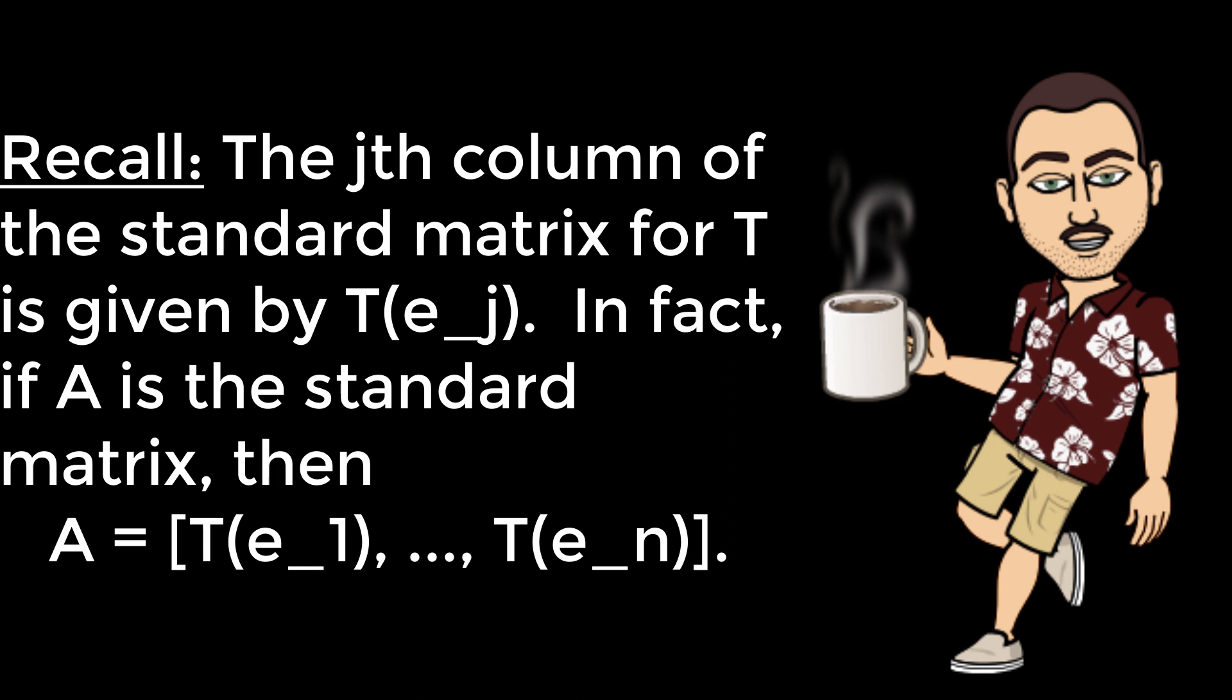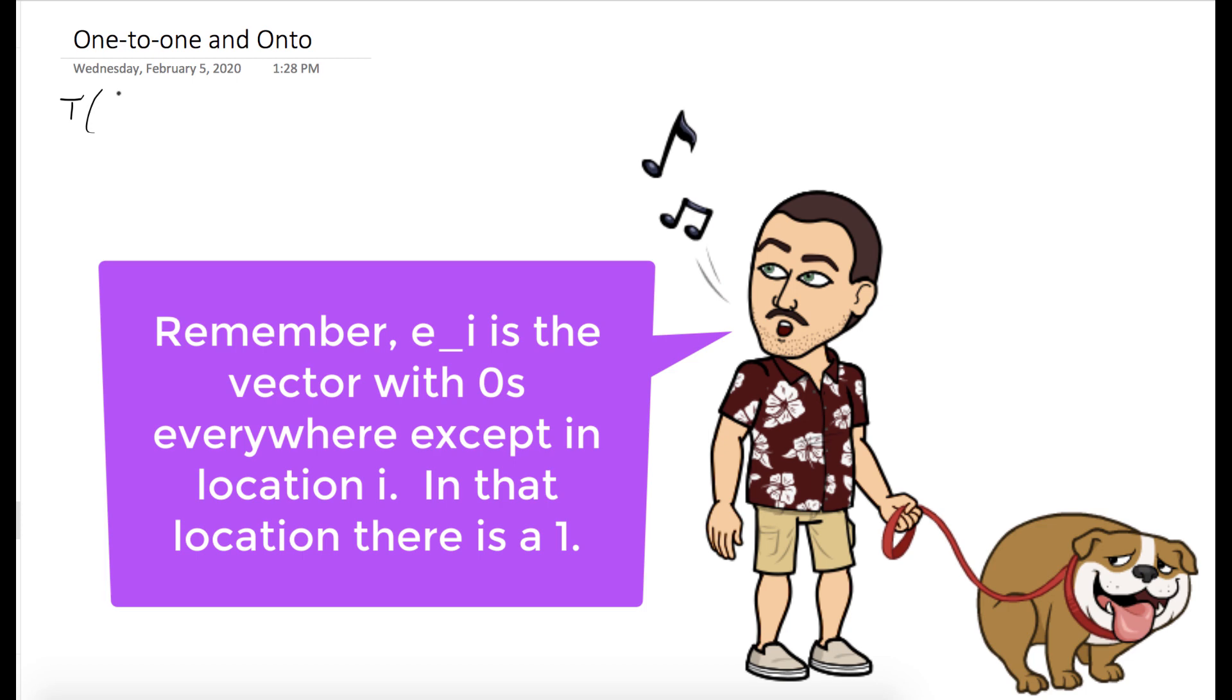So the images of these E_j vectors give us the columns of the standard matrix. We were given that T of E1 is equal to [1, 3].